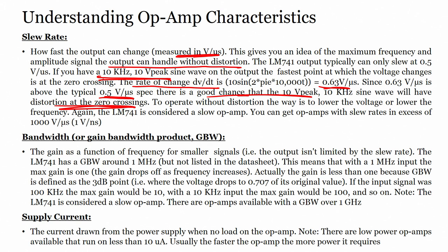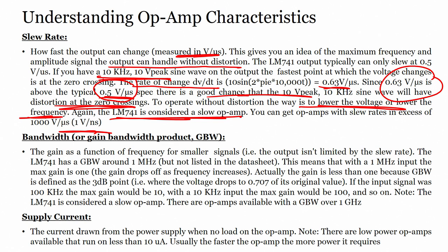To operate without distortion, the solution is to lower the voltage or lower the frequency. If the output requires 0.63 V/µs but the specification is 0.5 V/µs, there will be distortion at the zero crossing. LM741 is considered a slow op-amp; you can get an op-amp with a slew rate in excess of 1 volt per nanosecond.